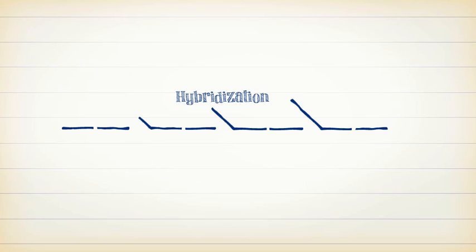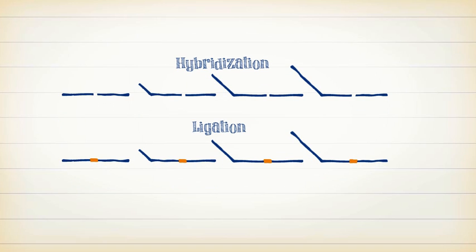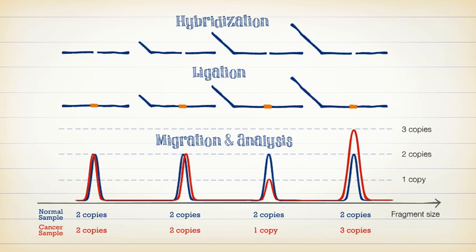MLPA, a technology commercialized by MRC Holland, can be used to determine which part of a gene has a different number of copies in a cancer sample. Two probes are designed for each part of the gene to be analyzed. Hybridization and ligation of the two probes generates a fragment. The measured signal intensity of that fragment is proportional to the number of copies in that portion of the gene.